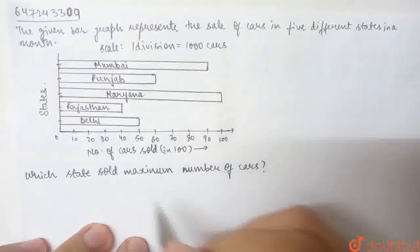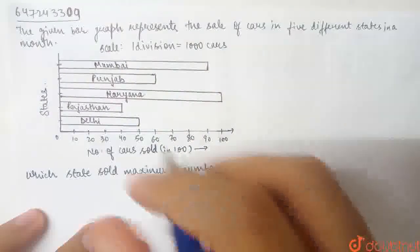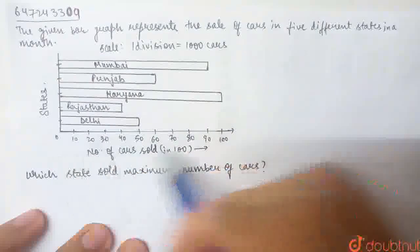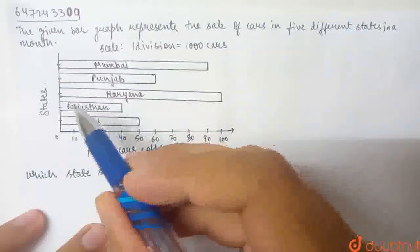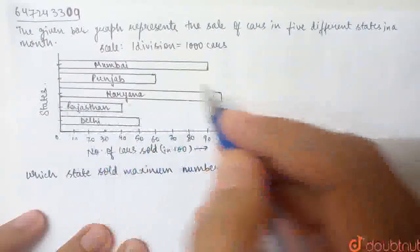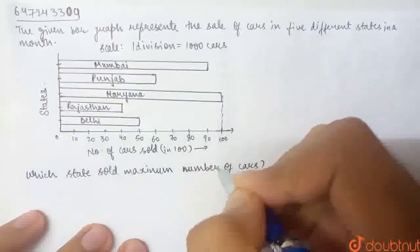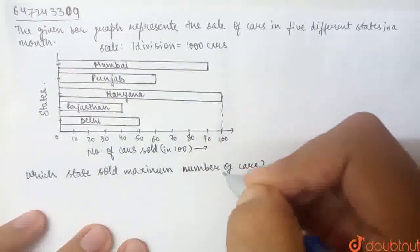We will tell you which state sold maximum number of cars. Now, the maximum number of cars will be sold where we have the largest bar. And what is the largest bar here? It's for Haryana and here we have a value of 100.